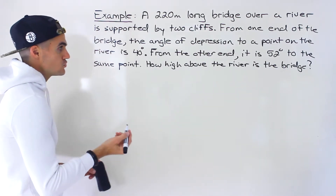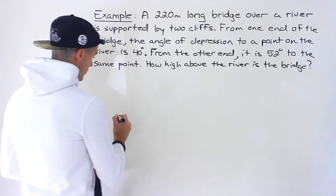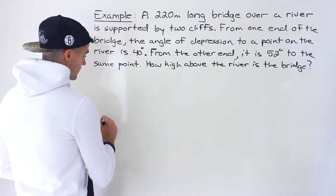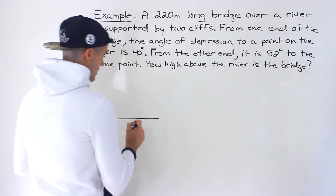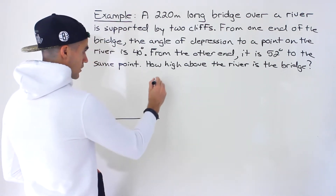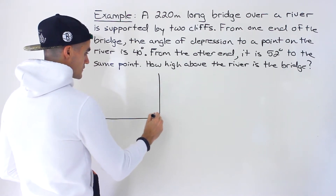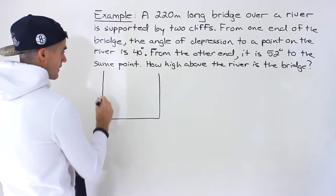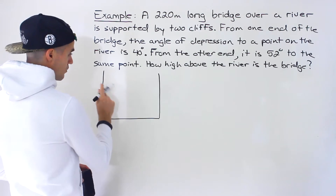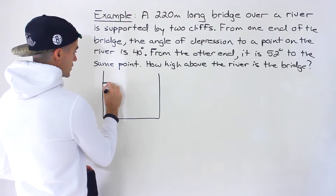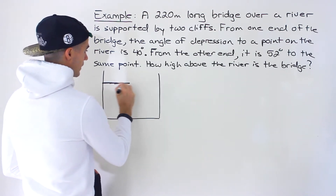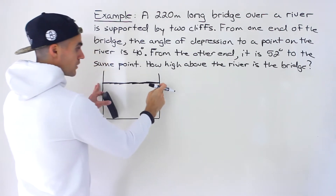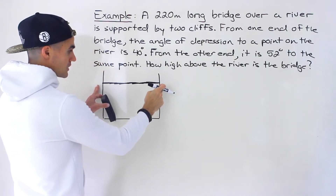Like usual, you want to start off with a diagram. So let's say this here is the river, and then we have these two cliffs like this. And then over the river there's this bridge here, supported by those cliffs.